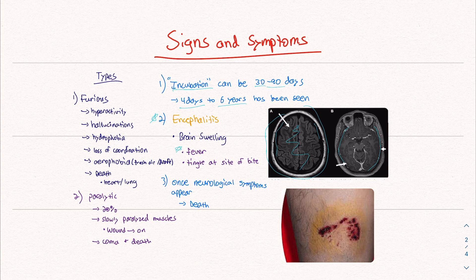You can expect a fever first, and then a tingle or burning sensation at the site of the bite. Once neurological symptoms appear, you're pretty much dead — there's nothing they can really do for you. There are two types of rabies infection: furious, which is the majority of them, and this results in hyperactivity, hallucinations, hydrophobia or fear of water, loss of coordination, and aerophobia — which is a fear of fresh air and drafts. And then death by heart and lung failure.